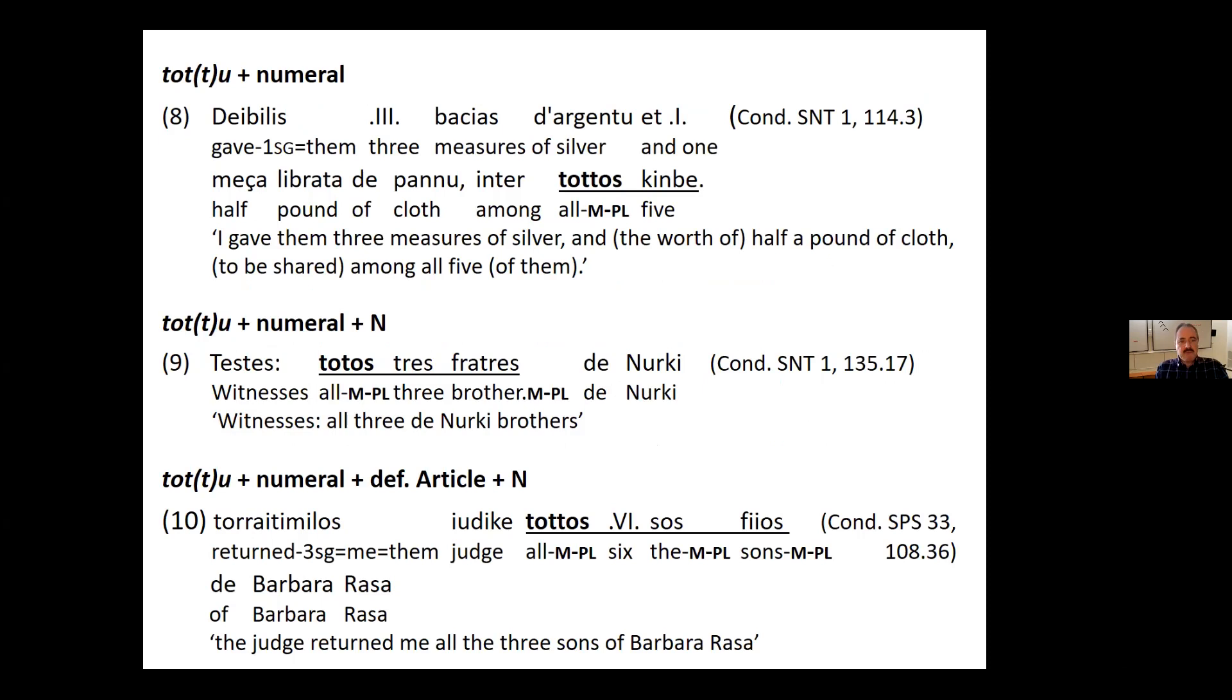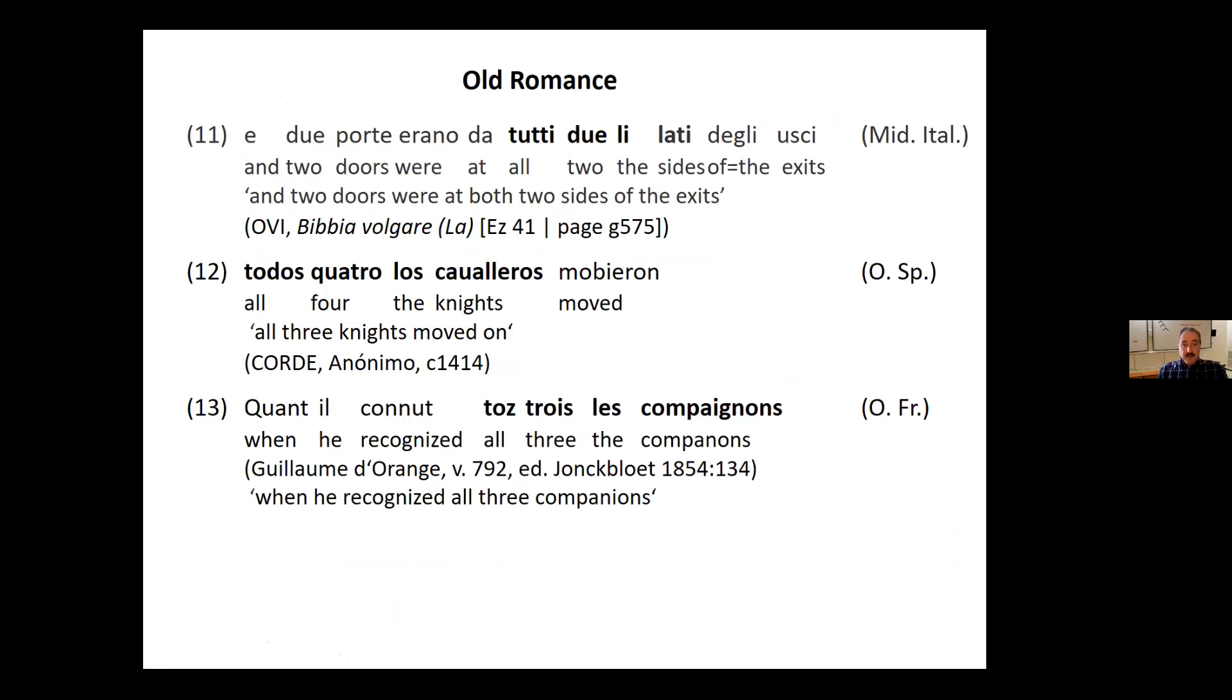Now, this is how these structures look like. There are essentially three types, either TOTTO alone with the numeral, TOTTO kimbe, here you see the agreement, all five, TOTTO plus numeral plus N, TOTTO tres fratrese, all three brothers, and TOTTO plus numeral plus definite article plus N, TOTTO sesos fijos.